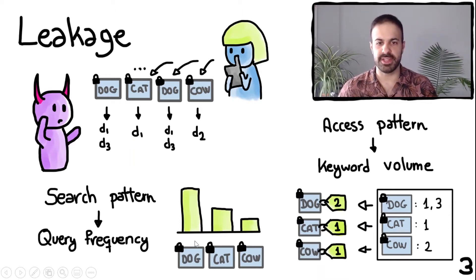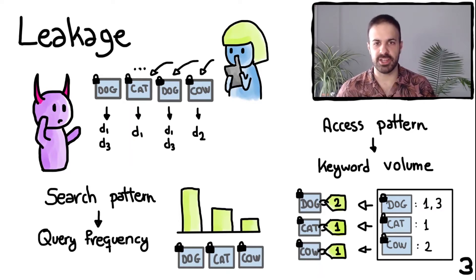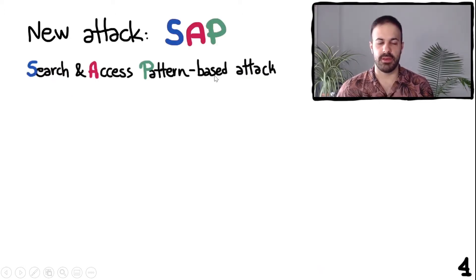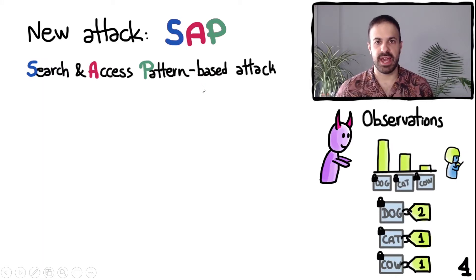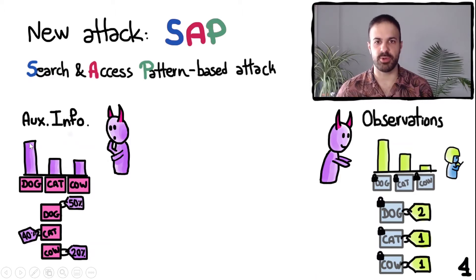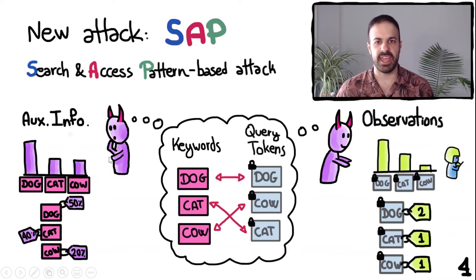This histogram represents the query frequency of each of these query tokens. In this work, we are interested in query recovery attacks, where the goal of the adversary is to guess the underlying keyword of each query token. Existing attacks use either the query frequency or the keyword volume to recover the keywords. In this work, we propose a new attack called SAP — for Search and Access Pattern based attack — that combines both types of leakage. The adversary has observations from Alice's queries, namely the frequencies and response volumes for each query token. Additionally, the adversary has auxiliary information regarding the query frequencies of actual keywords and the probability with which they appear in each document. We never give the adversary ground truth information.